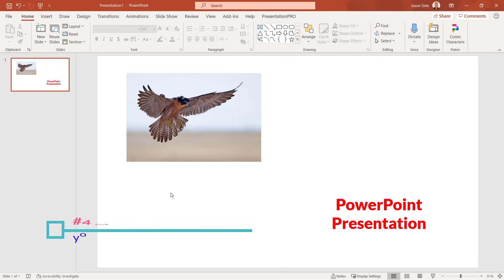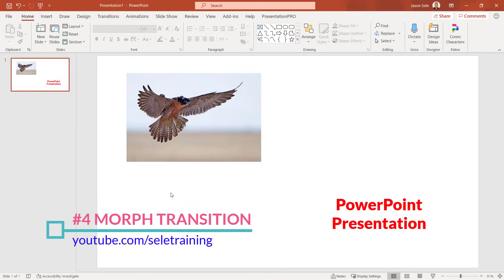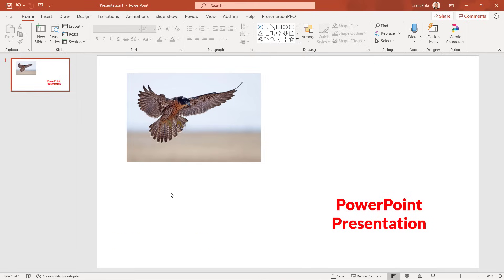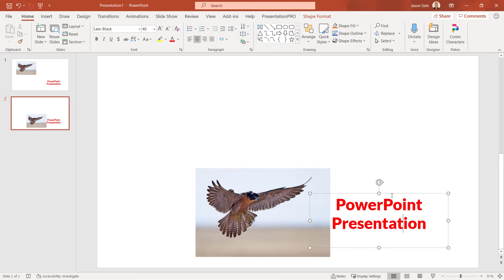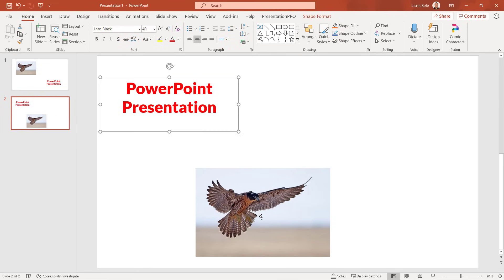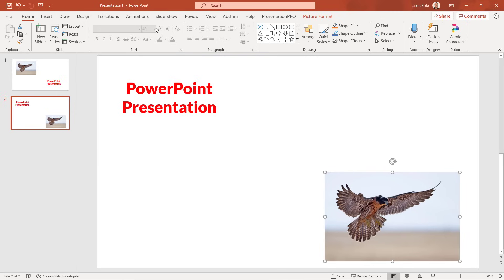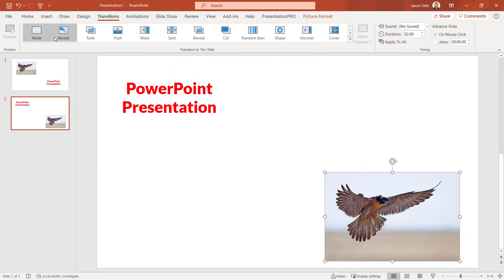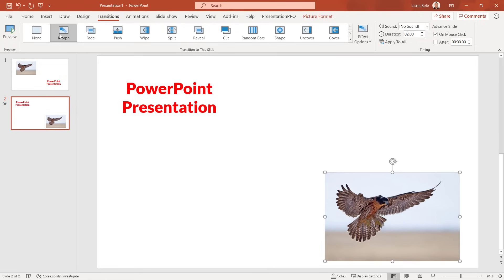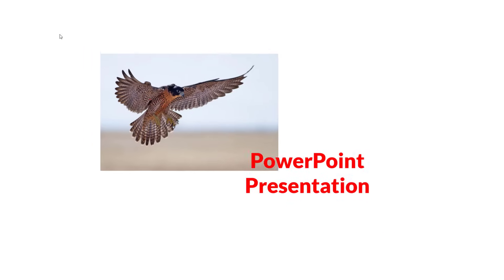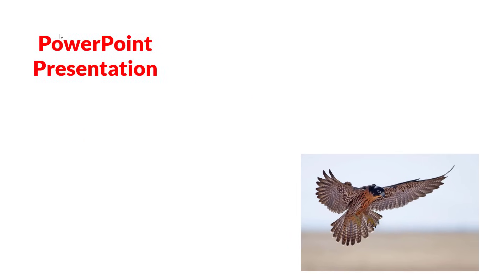Tip 4: Morph Transition. Morph is a great tool to transition from one slide to the next. Let's say we duplicate this slide, click on the second slide, and we want it to transfer two images from one side to the other. Go to the Transition tab and hit Morph, and now you'll see that transition from one slide to the next when you're in your presentation.